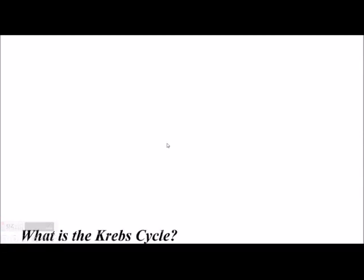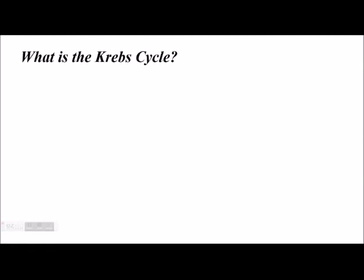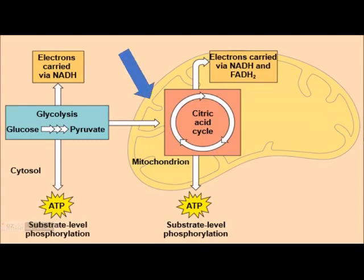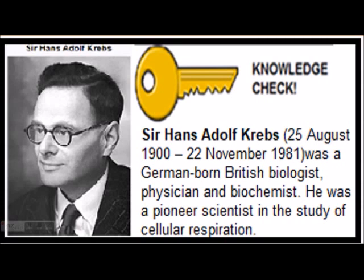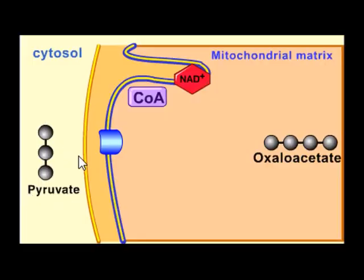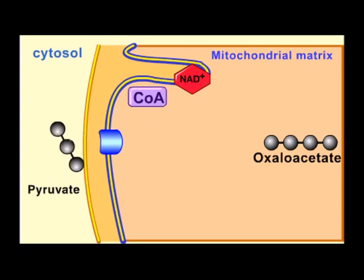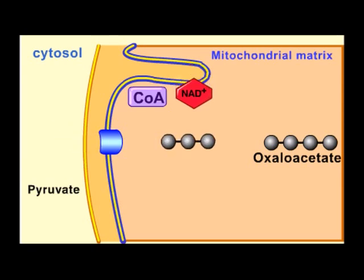Stage 2 of cellular respiration is called the Krebs cycle, also known as the citric acid cycle. It occurs in the mitochondria and requires oxygen. Here, the breakdown of glucose is completed and carbon dioxide is produced. This was named after its discoverer, Sir Hans Adolf Krebs. The pyruvate, a byproduct of glycolysis from the first stage in the cytosol, enters the mitochondria and is acted upon by NAD and coenzyme A, converting it to molecules of acetyl coenzyme A, carbon dioxide, and NADH.